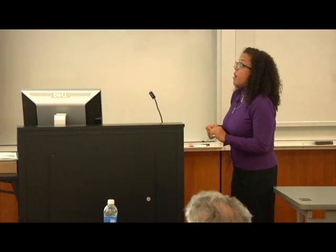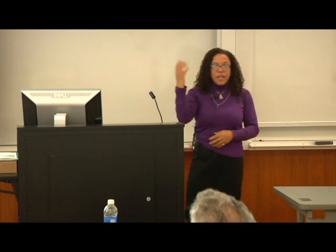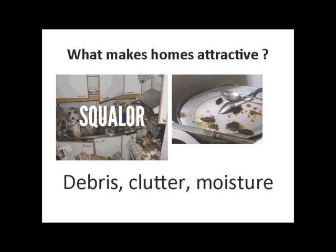Some things that make homes attractive for cockroaches are squalor, which can vary from extreme cases to simply having food items or grease left on the stovetop. Small amounts of food and debris can allow cockroaches to thrive. Cockroaches can live for long periods of time without moisture and food, so even infrequent squalor can make a home attractive, and general debris and clutter can provide lots of habitat structure for these populations.